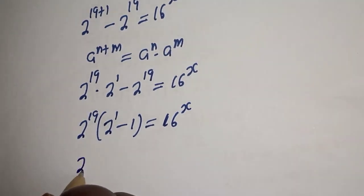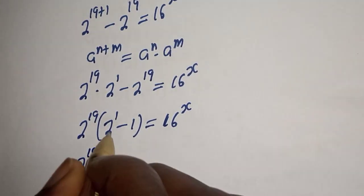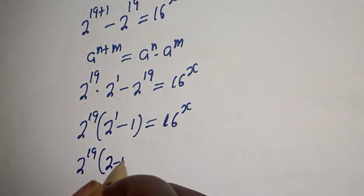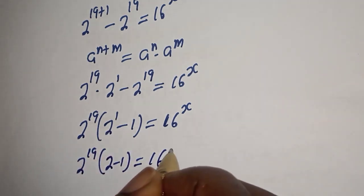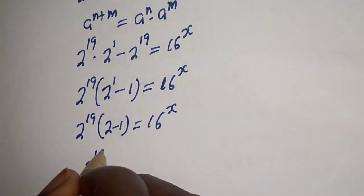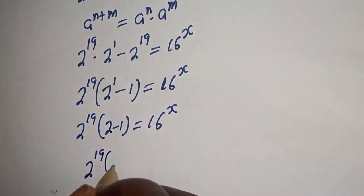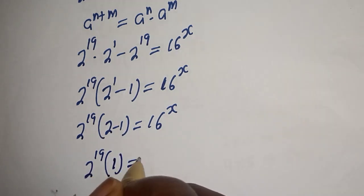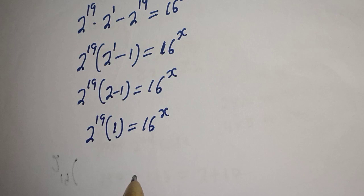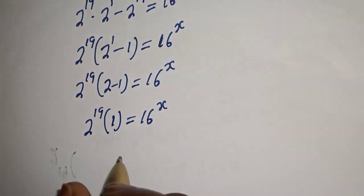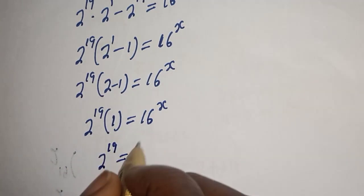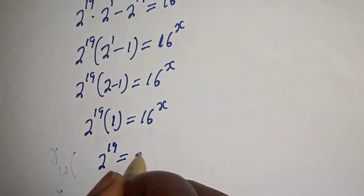Here is 2 raised to power 19, bracket 2 raised to power 1 is 2, minus 1, equals 1 inside the bracket. So 2 raised to power 19 multiplied by 1 gives us 2 raised to power 19, which is equal to 16 raised to power x. This can be written as 2 raised to power 19 is equal to 2 raised to power 4 to the power of x.